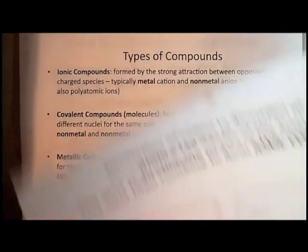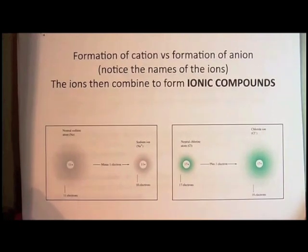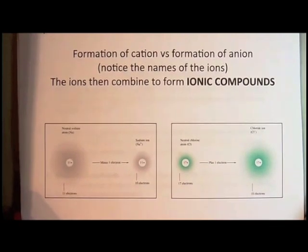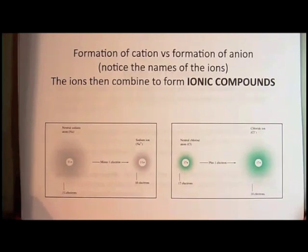By now you should have already done that Pogel exercise on ionic compounds and you should have discovered for yourself what is an ionic compound. I'm going to review it here quickly for you. In order to have an ionic compound, you have to have a cation and an anion.